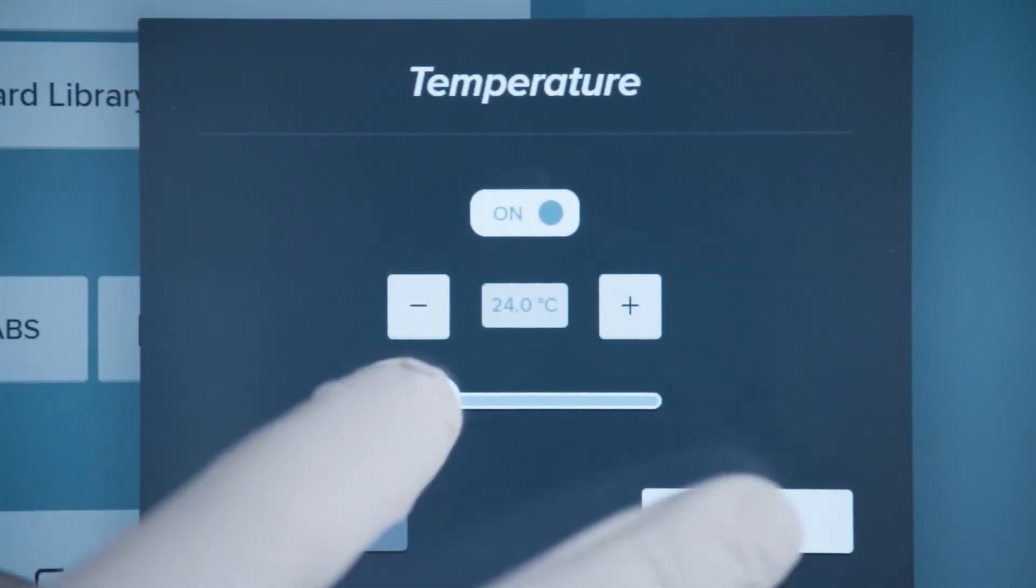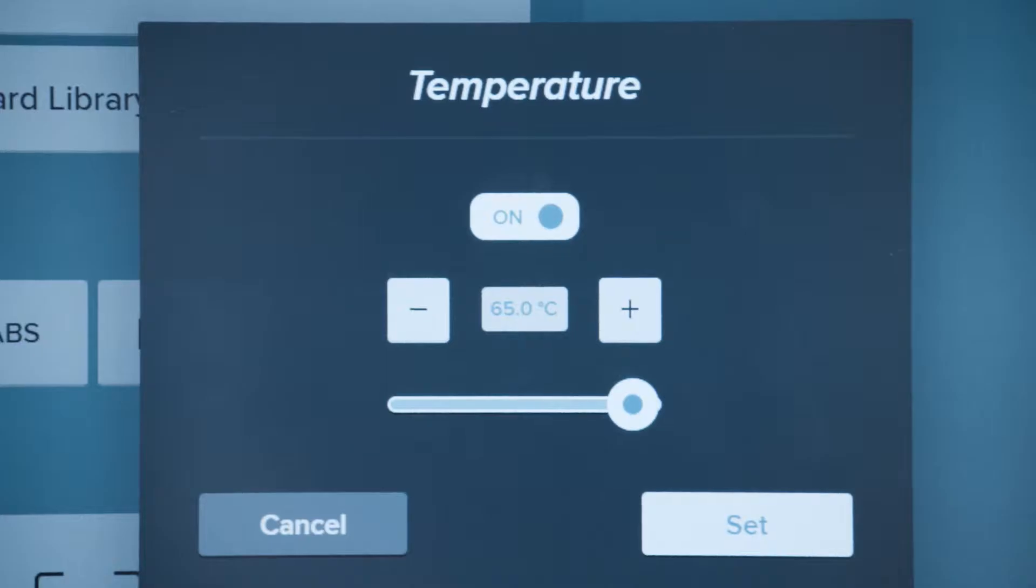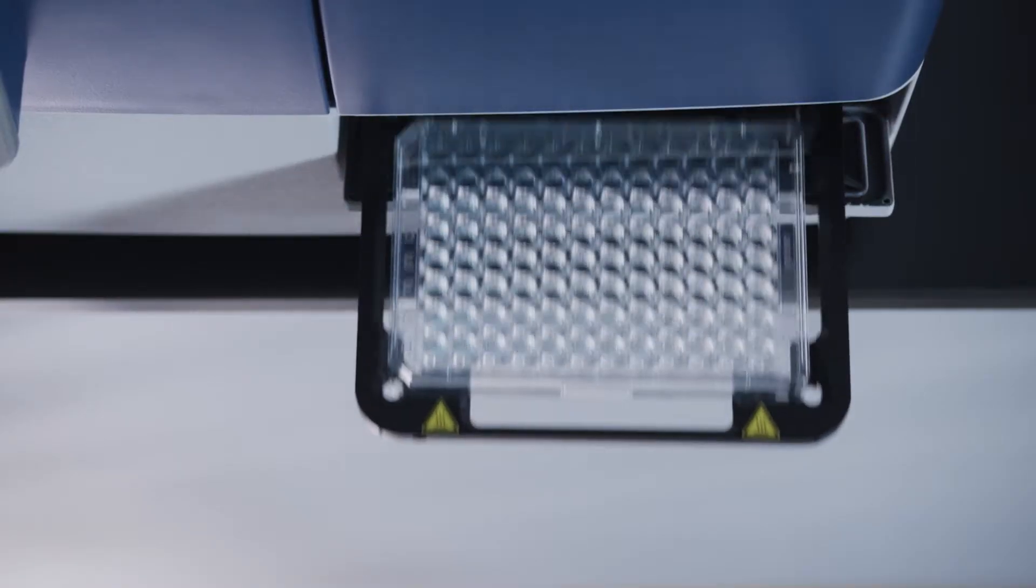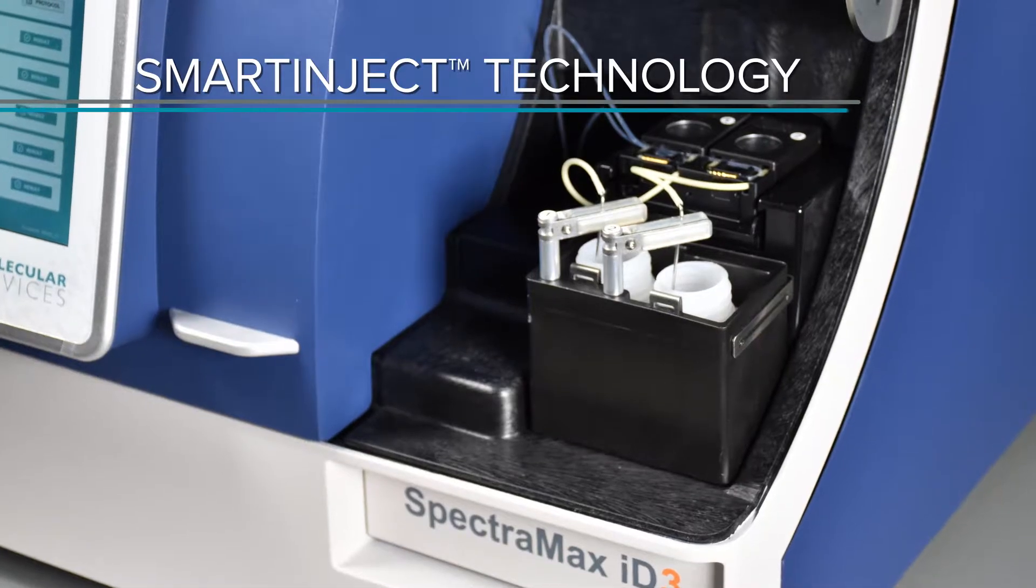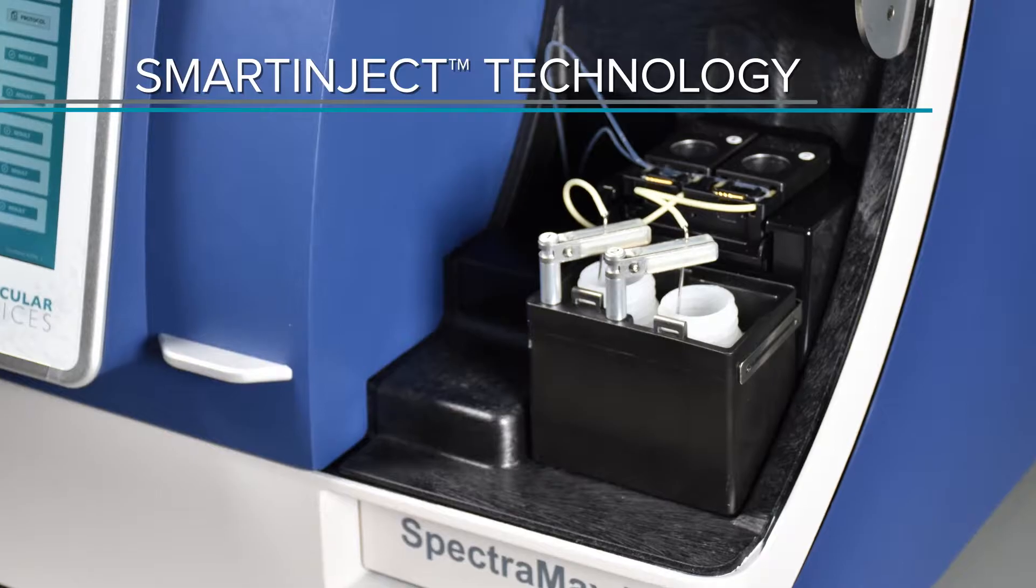The ID.3 also features temperature control to 65 degrees Celsius, orbital shaking, and field installable injectors for fast kinetic assays in any read mode.